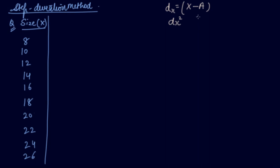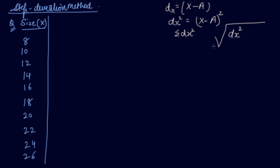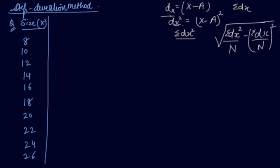In the direct method we took deviation from the exact mean; here we use the assumed mean. We find the sum of deviation and the sum of squared deviations. The formula is: SD = √(Σdx²/n − (Σdx/n)²). You find Σdx, then n, then dx², then Σdx².